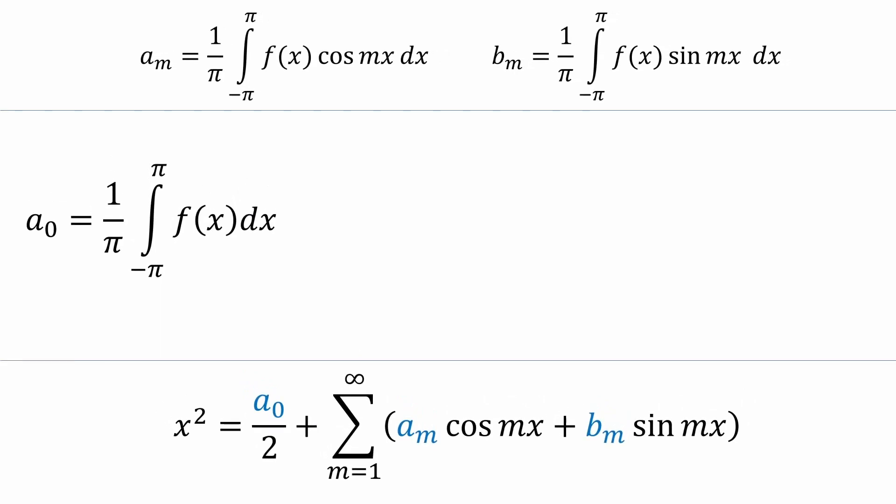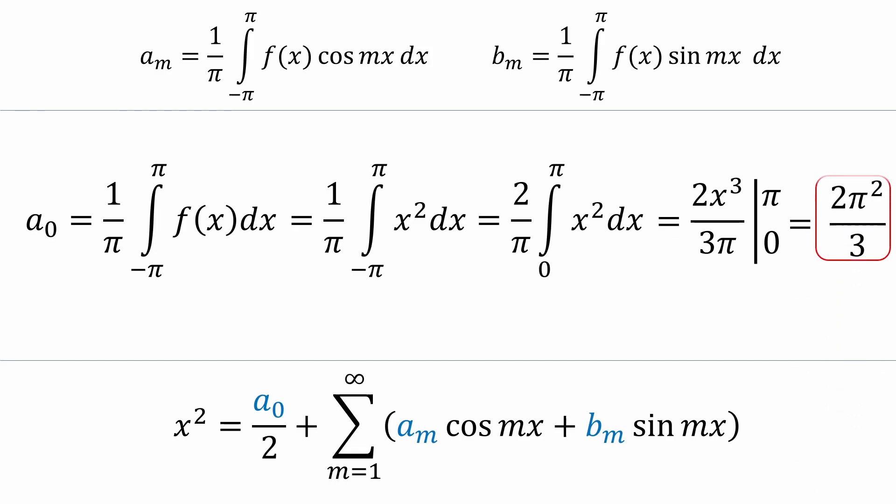So let's start with a₀. We'll first replace f with x squared. And next, since x squared is an even function, we can rewrite the limits of integration from 0 to π and double the integral. That's equal to 2x³ over 3π. And evaluating from 0 to π, we get 2π² over 3. And that result for the a₀ coefficient can now be substituted into our Fourier series below.